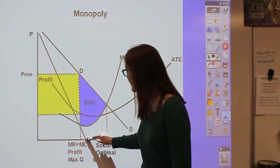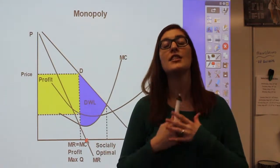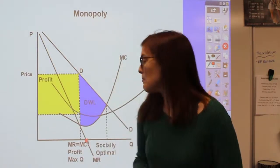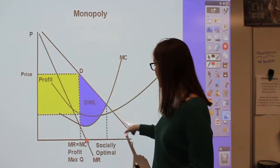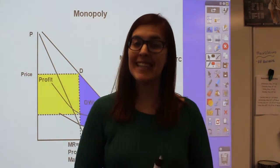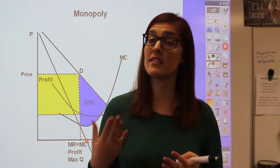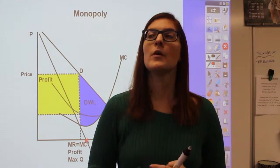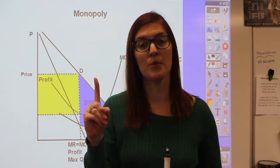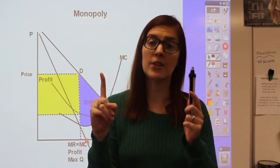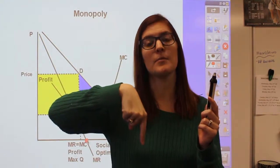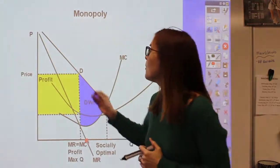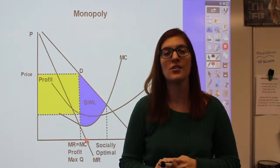Where marginal revenue intersects zero, that point on the demand curve is the unit elastic portion — not inelastic or elastic, right in the middle. When marginal revenue is negative, the bottom portion of the demand curve is the inelastic portion. On the inelastic portion, if price increases, total revenue increases; if price decreases, total revenue decreases. So the monopolist needs to know which part of the demand curve they are charging a price on, because that directly determines how a price change will affect total revenue.